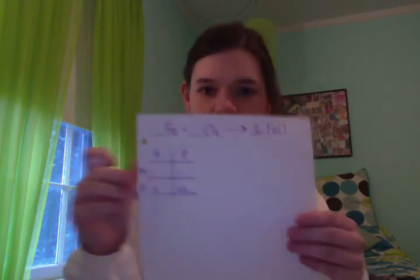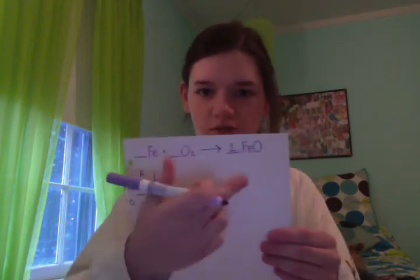So the iron is balanced but the oxygen isn't, so you have to do a trial and error to make it balanced. I'm going to change the product to two oxygen, which then changes it to two iron. So the chart would then look like that.